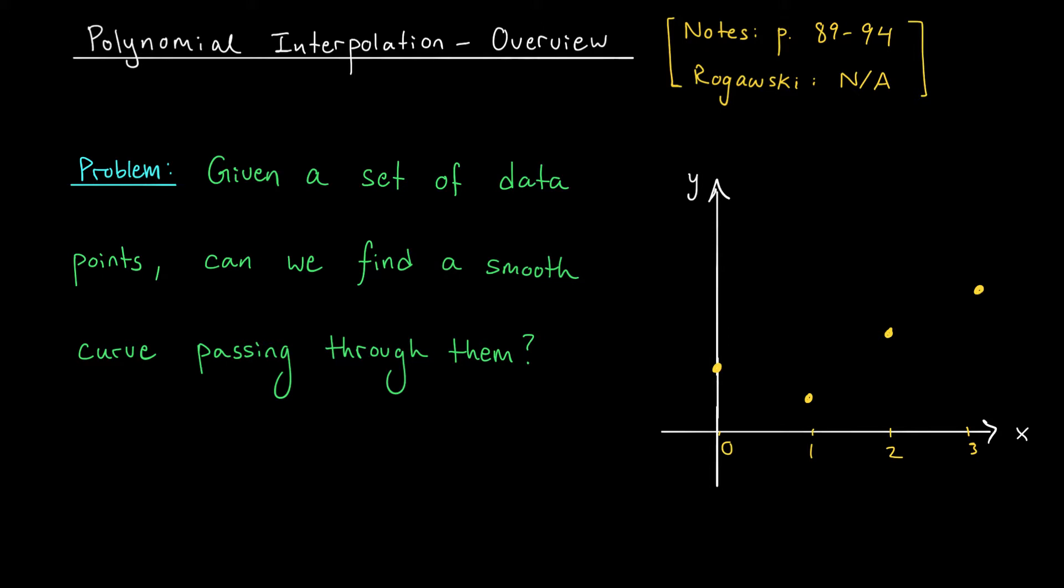The question we're going to be looking at today is a very natural one. Suppose that you're working with some function y equals f of x but you don't know the precise equation of that function. Instead you've just got a few data points to work with that maybe you've collected through experimentation. This could be the speed of an object over various times, the profits of a firm day by day, it could represent lots of different things.